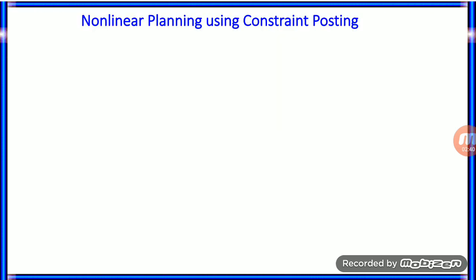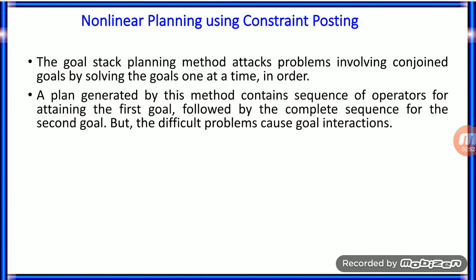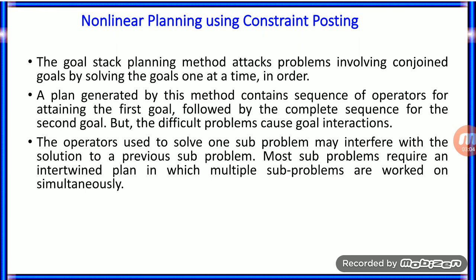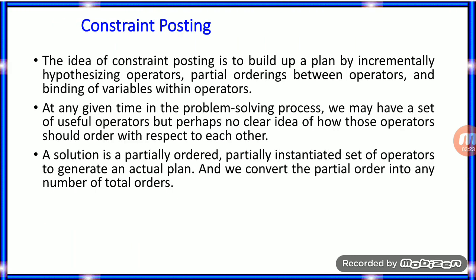The next topic is non-linear planning using constraint posting. The goal stack planning method attacks problems involving conjoined goals by solving goals one at a time in order. The plan generated may lead to difficult problems where goal interactions occur. You cannot apply goal stack planning for non-linear problems. Such a plan is called non-linear because it is not composed of a linear sequence of complete sub-plans; for that kind of problem you use the concept called constraint posting.